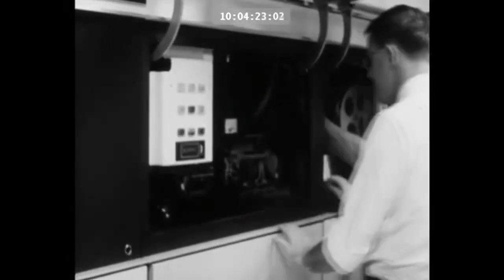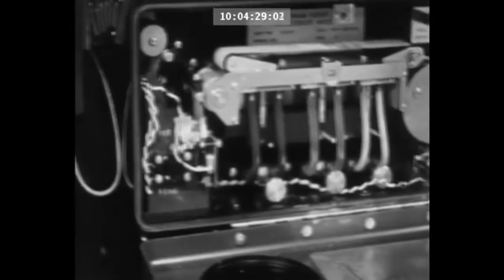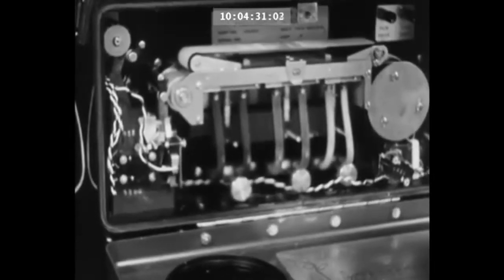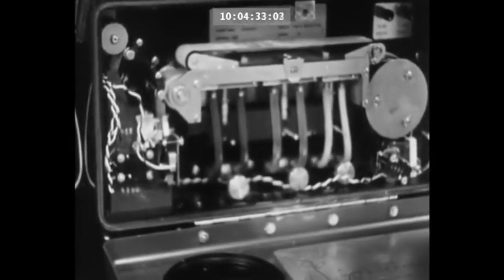Facing the tube is an ordinary film camera, which photographs the images one by one as they appear. Also built into the apparatus, a developing tank, so that the film can be processed immediately after it's been taken.